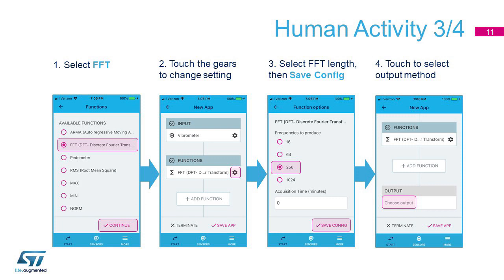The screen with the functions opens. These are only the functions compatible with the selected inputs — in our case, the accelerometer. Here, for example, we select the FFT and hit Continue at the bottom.